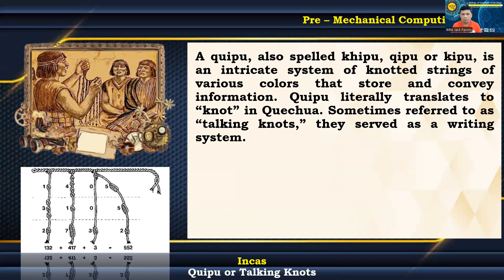Tens, hundreds, thousands, and tens of thousands are represented by a single knot. The number of twists in the long knots, which symbolize two through nine, is shown. The figure eight knot stands in for position one.